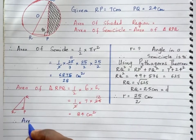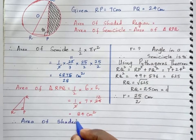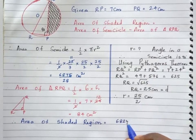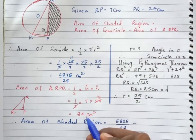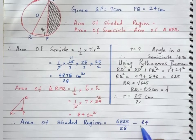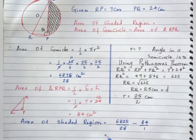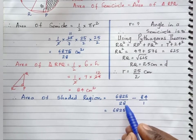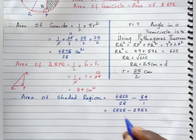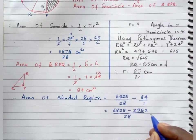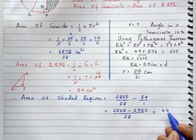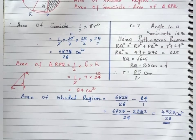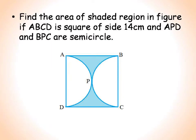Area of shaded region equals area of semicircle minus area of right angle triangle PQR. That is 6875/28 minus 84. Converting 84 to the same denominator: 84 into 28 equals 2352. So 6875 minus 2352 divided by 28 gives 4523 divided by 28 centimeter square. Note: a small correction — the semicircle area numerator is 6875.